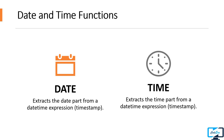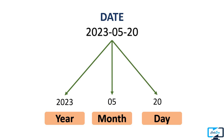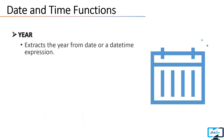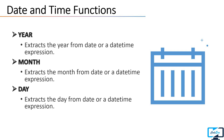After the DATE and TIME functions, let's discuss a few more. Suppose you have a date or datetime expression as input but you want to display only the year, or only the month or day. For this purpose we have three different functions: YEAR, which extracts the year from a date or datetime expression; MONTH, which returns only the month; and DAY, which returns only the day from a date or datetime expression.